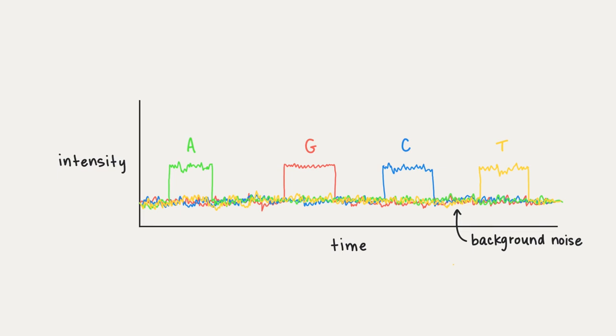We can see that the base added after adenine was red which means that it was guanine, then blue which means it was cytosine, then yellow means thymine. These signals are converted to long sequences called continuous long reads.